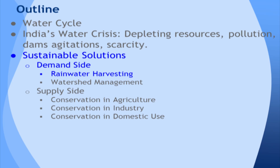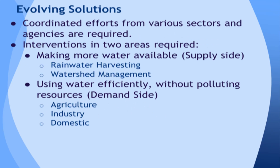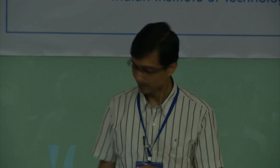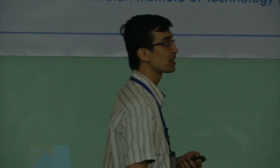Now towards solutions. When we talk about solutions, I am partitioning them into two. The first is making more water available — we are under water stress, so how do we ensure adequate water is available? Second, once adequate water is available, how do we use it efficiently? So there are two parts: the supply side and the demand side. In these two areas we can think of solutions or interventions. Let us look at the first one — making adequate water available.